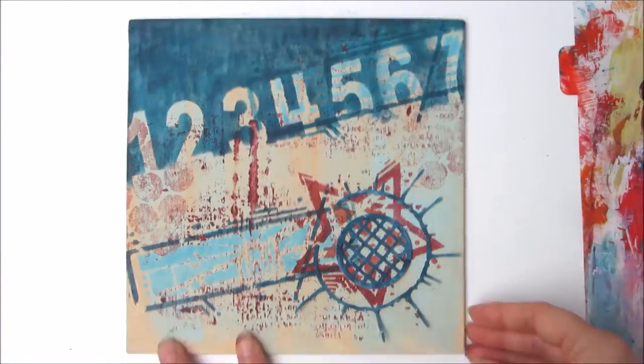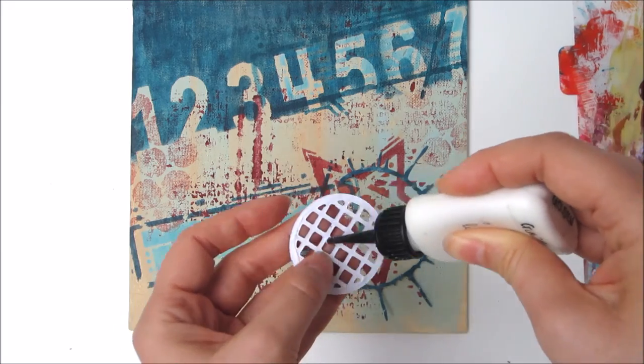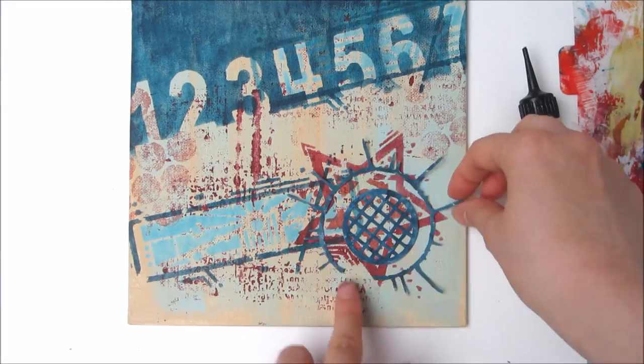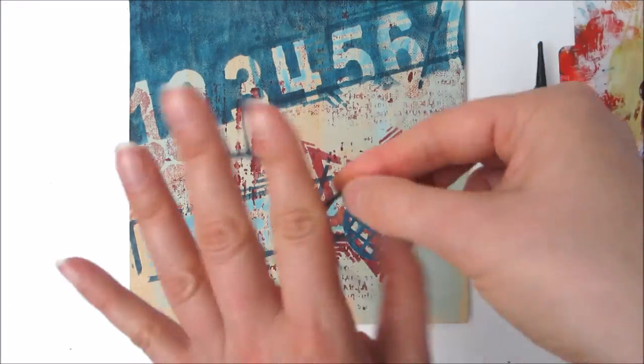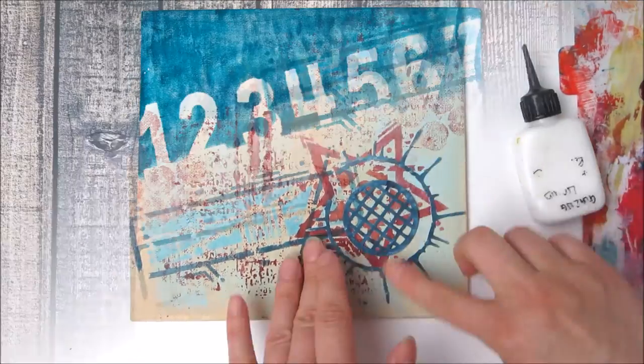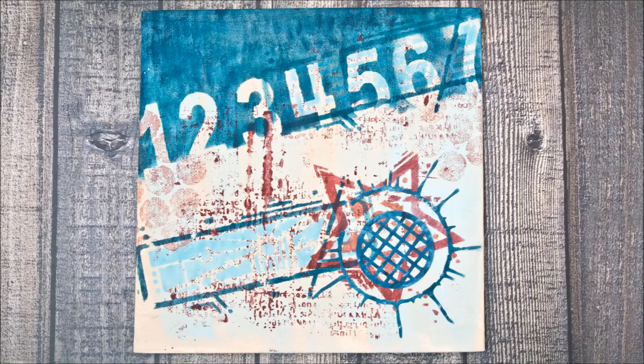Now all I need to do is glue down the die-cut elements that I had colored earlier with paint. I'm just using some Golden Regular Gel that I keep in this very handy bottle applicator for all these types of gluing jobs. That is the finished project and as you can see in the close-ups, it's packed full of texture.